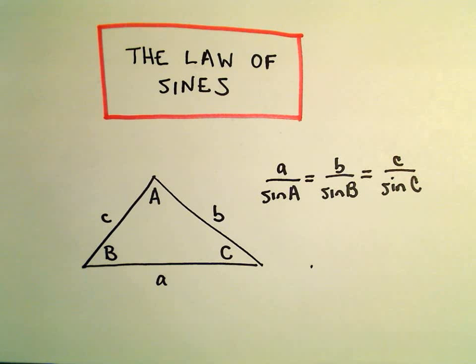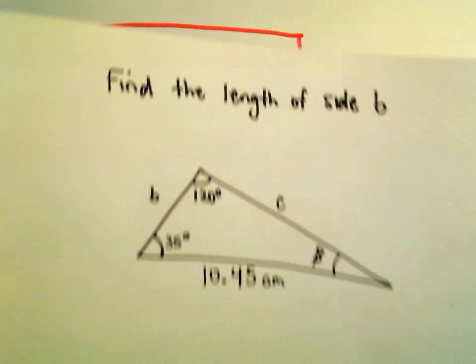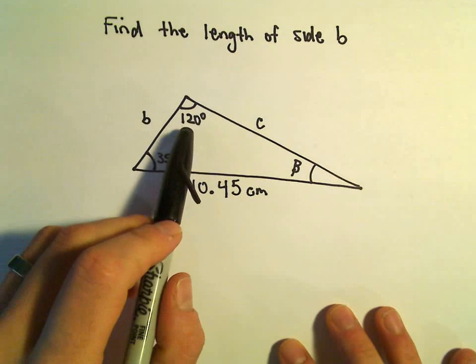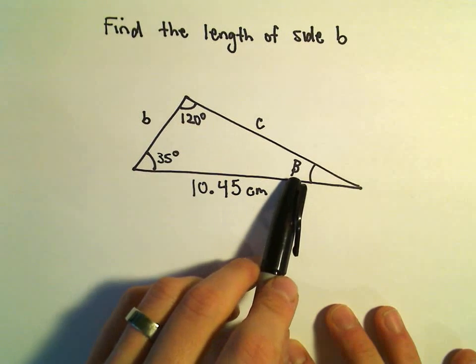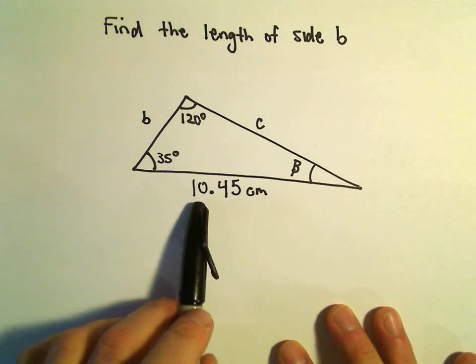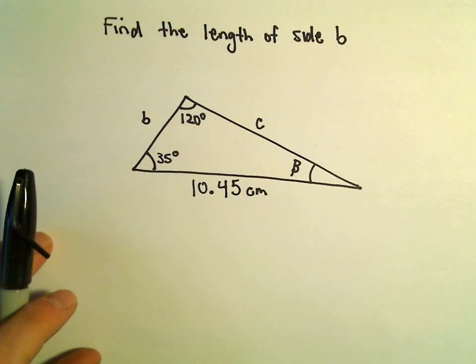Alright, so another example here using the law of sines. Suppose we've got a triangle here, we've got angle of 35 degrees, 120 degrees, we don't know our angle beta. The side opposite 120 is 10.45, we want to find the side length b.